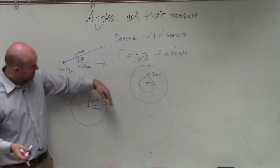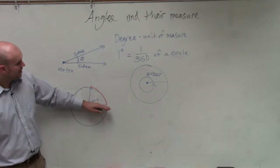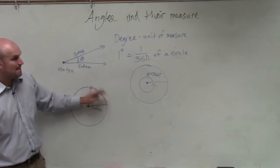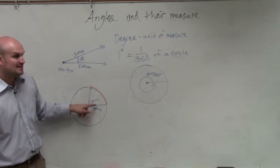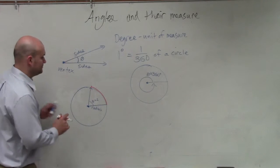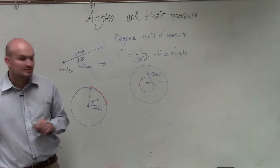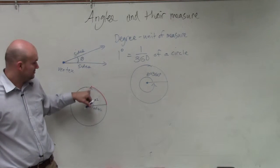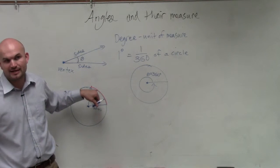So if you take the radius and wrap it around the circle — if you rotate a ray to the distance of that radius around the circle, the measurement between the initial part and the terminal part equals one radian. It doesn't matter what the circle is — any circle.